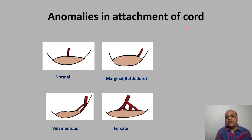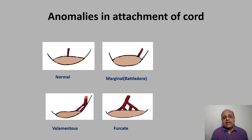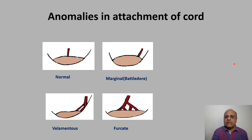There may also be anomalies in the attachment of the cord. Normally the cord is attached to the center of the placenta, but it may be attached to the peripheral edge — this is called battledore placenta. The cord may be attached to the amnion, with vessels ramifying from there to the placenta; this is called velamentous insertion of the cord. The cord may also show branching before attaching to the placenta, which is called furcate placenta.